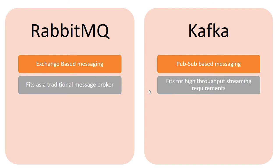The second point is that the use cases for which the two fit vary. Typically when you need a conventional or traditional message broker to act as middleware between your producers and consumers for different use cases, you will go for RabbitMQ. It acts as a typical message broker to loosely decouple your producers and subscribers, with producers sending messages to the exchange and bound queues receiving the messages and pushing them toward the consumer.